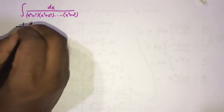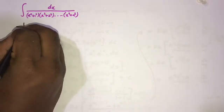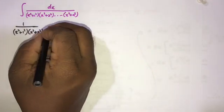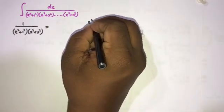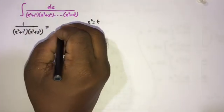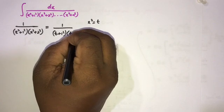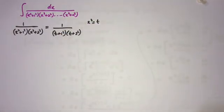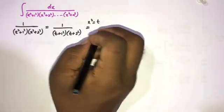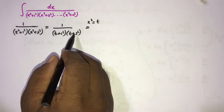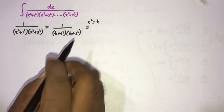To begin, I am going to take 1 over (x²+1²)(x²+2²) and find the partial fractions. We take x²=t, so we can write this as 1 over (t+1)(t+2). Now if we plug in t=-1, we get 1 over (-1+4) which is 1/3.